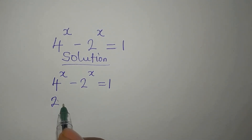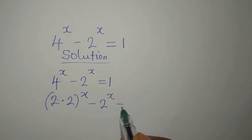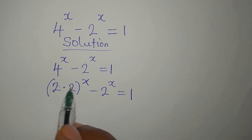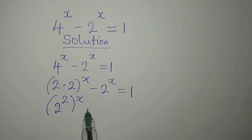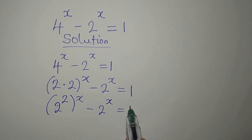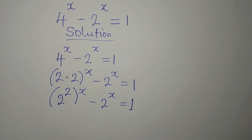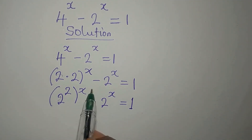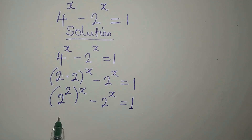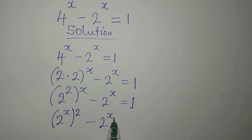4 here is the same as 2 times 2, so there is a power of X over there, then minus 2 to the power of X equals 1. Now, 2 times 2 is the same as 2 to the power of 2, then we have power of X, minus 2 to the power of X equals 1. I can change the position of the power because it is multiplication — if you're multiplying, the one that comes first does not really matter. So I write X there and we have 2 to the power of X, now to the power of 2, minus 2 to the power of X, everything equals 1.